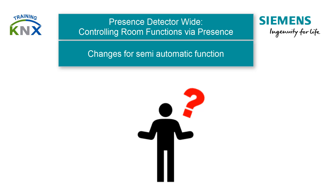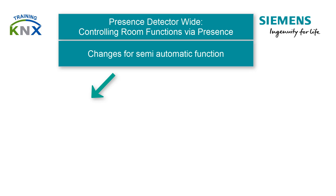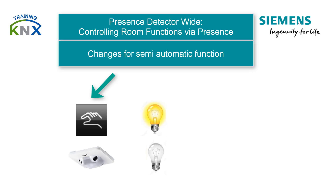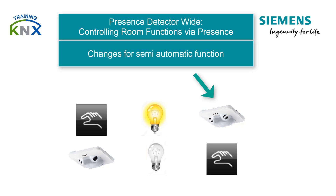How do I set the Presence Detector for Lighting to Semi-Automatic Function? Semi-Automatic Function means that you either switch on the lighting manually and let the Presence Detector switch off (Semi-Automatic off), or let it switch on automatically but then switch it off manually (Semi-Automatic on).